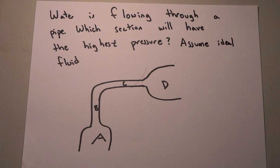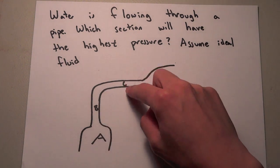Today we have a physics question of the day and it asks, water is flowing through a pipe. Which section will have the highest pressure? And we assume that this is an ideal fluid. And so we're just comparing A to B to C to D.